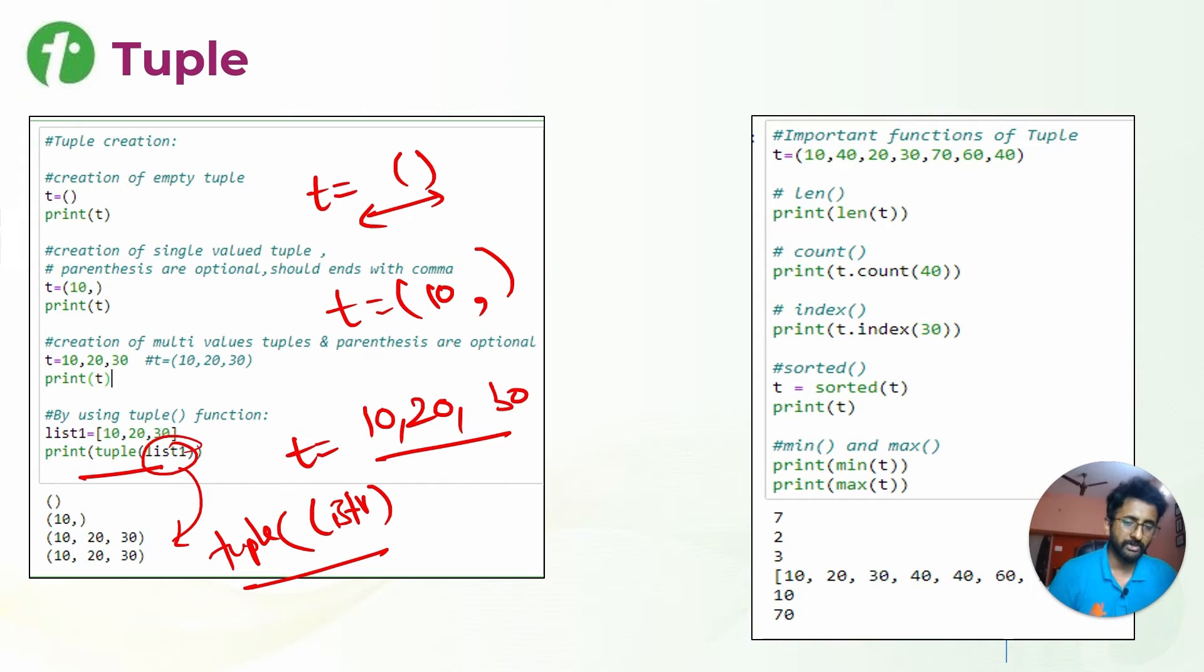Similarly, there are different functions that we have seen in list and strings as well, like the length function, which tells how many elements are there in the tuple. Count of 40 will count how many times 40 is there in the tuple. Index of 30—that means 0, 1, 2, and 3—so third index. Then sorted, it will sort out the tuple with correct elements in order. This way you can print the minimum and maximum from the tuple. These are the outputs for these different method operations that we can perform on tuple.